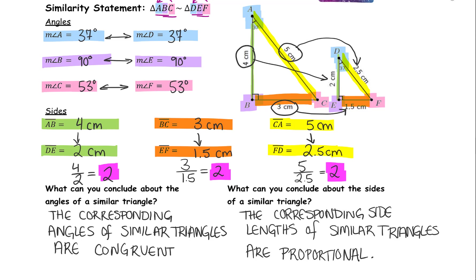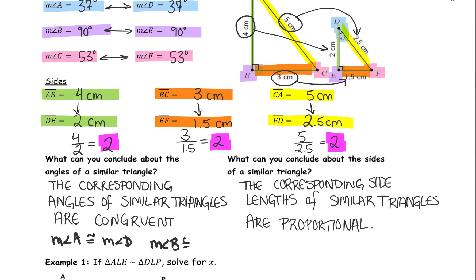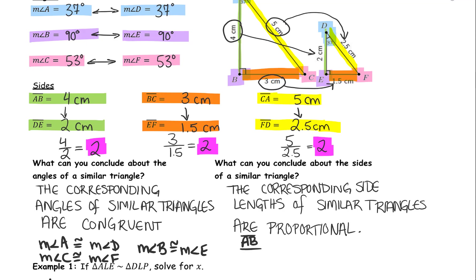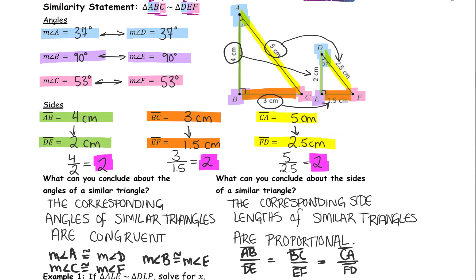So in terms of our triangle, the measure of angle A was congruent to the measure of angle D, the measure of angle B was congruent to the measure of angle E, and the measure of angle C was congruent to the measure of angle F. And our side lengths can be set up as ratios: side AB divided by side DE is equal to side BC divided by side EF, which is also equal to CA divided by side FD. So we can see that our angles are congruent and the ratios of our sides are equal. This can help us solve for missing parts of similar triangles.